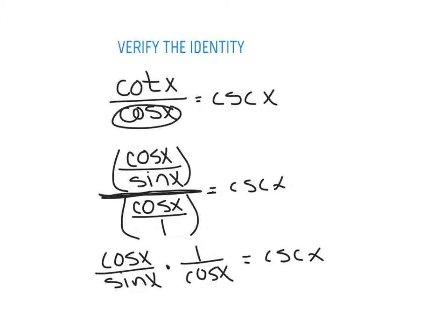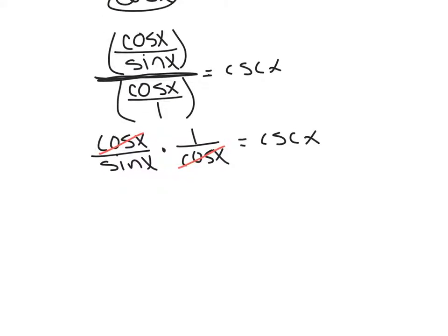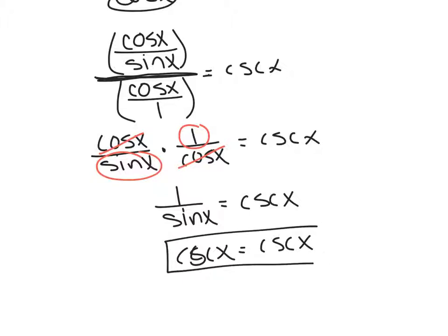Now, what I'm going to do is I'm going to do a little keep-change-flip. So, I'm going to keep the first fraction, change division to multiplication right here, and then flip the second fraction. Think of it as cosine of x divided by the sine of x multiplied by 1 over the cosine of x. What you can do algebraically here is cancel out these cosines. We now have 1 divided by sine, and that, indeed, is equal to cosecant. So, we've proven that cosecant does equal cosecant. And, this is what we call verifying the identity.